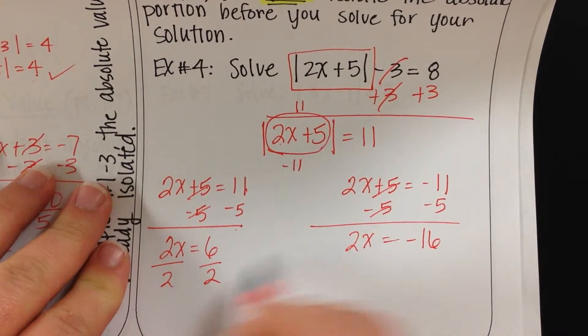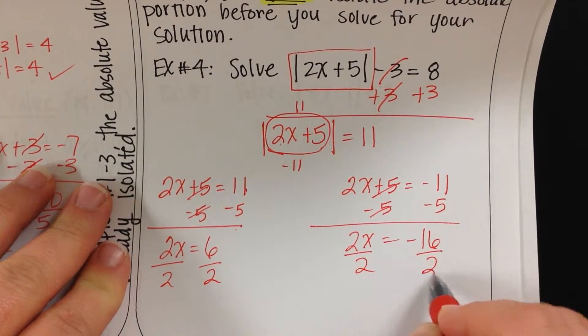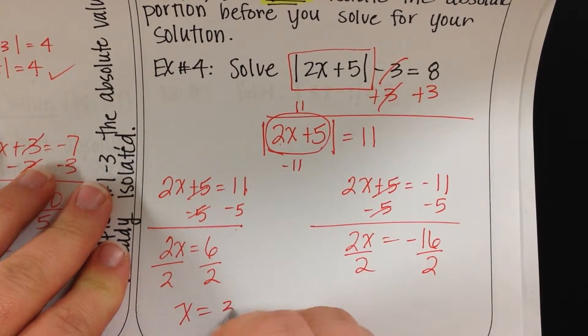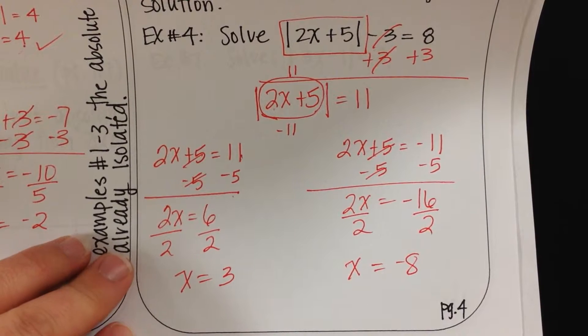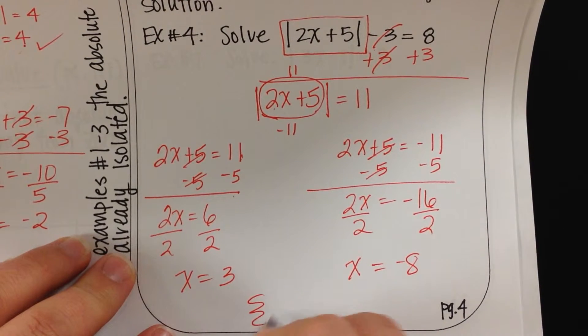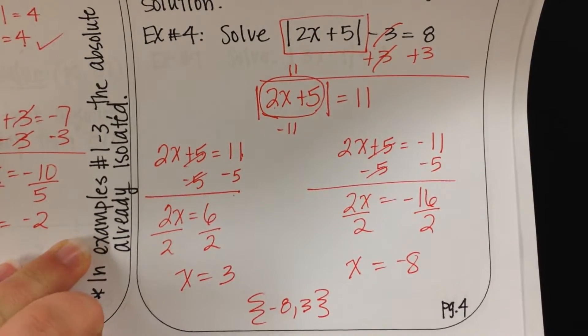From here, we divide off 2. x is equal to positive 3. x is equal to negative 8. And then, obviously, we want to write our final solution in bracket notation. So, negative 8, comma, 3. And this would be my final answer for this portion.